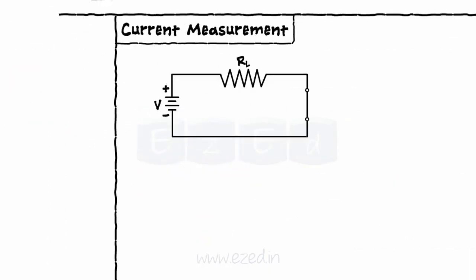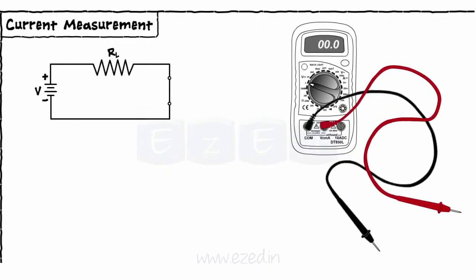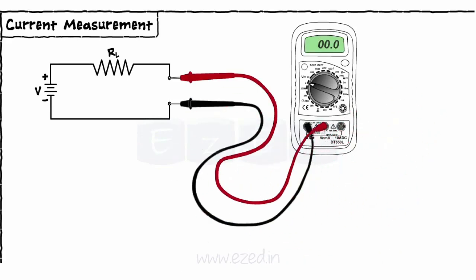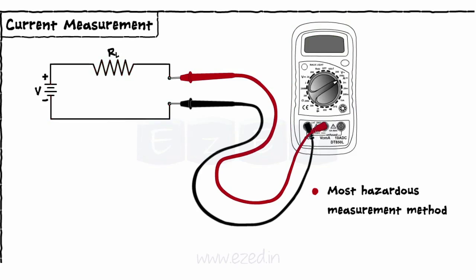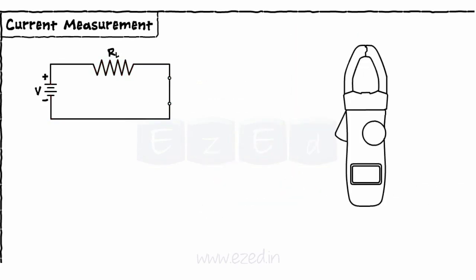Current is always measured by connecting a meter in series with the load or circuit element. To measure the current using a meter, the dial is turned to select the current range. This is the most hazardous measurement made with the multimeter, because the meter now is a part of the circuit, and any accident may result in a severe shock. To prevent this, a clipper is used in industries to measure the current flowing through a wire.